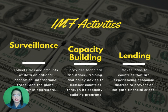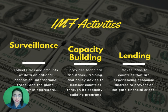The IMF's activities include surveillance, where it collects massive amounts of data on national economies, international trade, and the global economy in aggregate. For capacity building, it provides technical assistance, training, and policy advice to member countries. For lending, it makes loans to countries experiencing economic distress to prevent or mitigate financial crises.